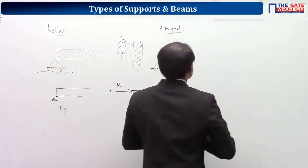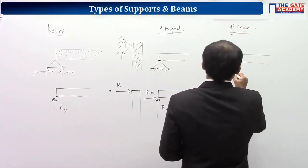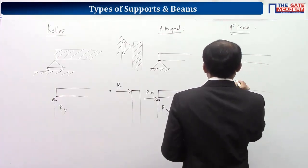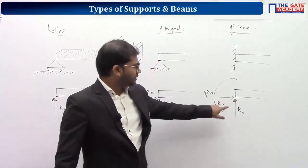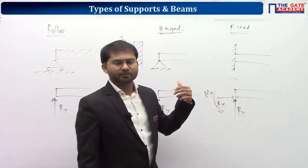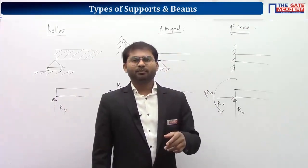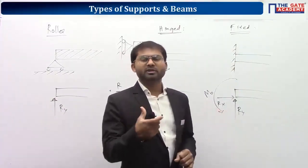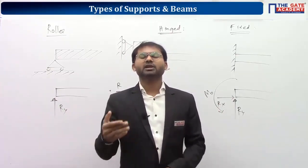For a fixed support, the beam will have reaction force Rx, reaction force Ry, and also a reaction moment M0. The beam is not allowed to freely rotate about this point. Whenever you see such a support, you must put all forces and moments in the free body diagram. If you miss any one force — such as Rx in the hinged case or the reaction moment in the fixed case — you will get the wrong answer.